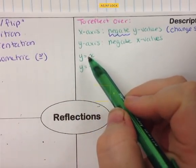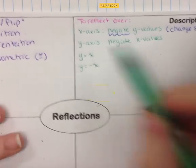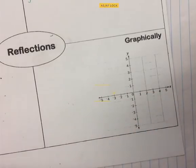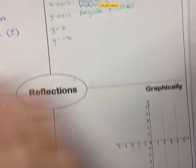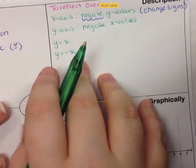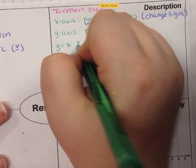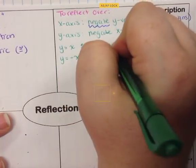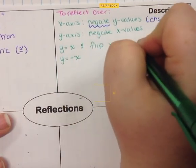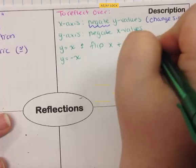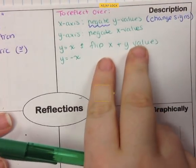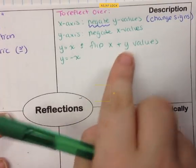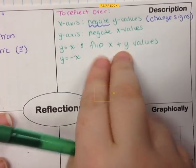The lines y equals x and y equals negative x are diagonal lines that go through the origin. We're going to reflect over those diagonal lines — you can reflect over other diagonal lines as well, but these have very specific rules. To flip over the line y equals x, you flip the x and y values. You just take the x and y values where they are and flip them. They don't change signs — you just make the numbers flip positions.